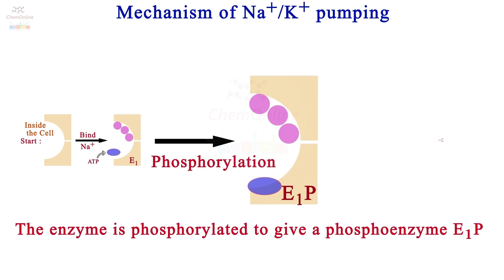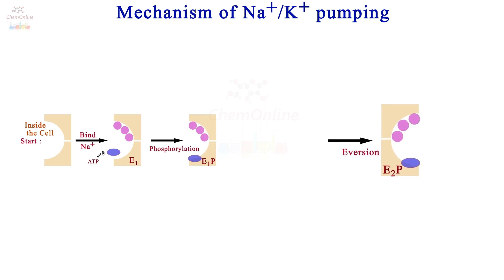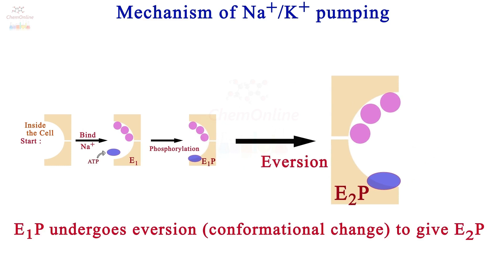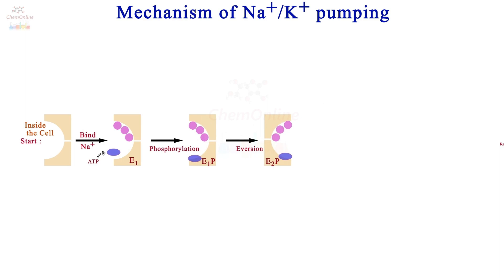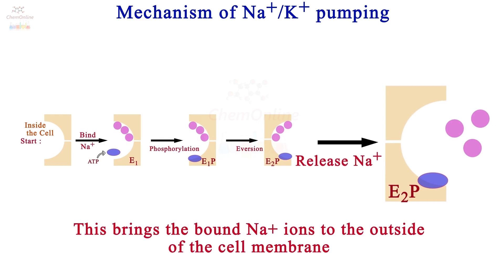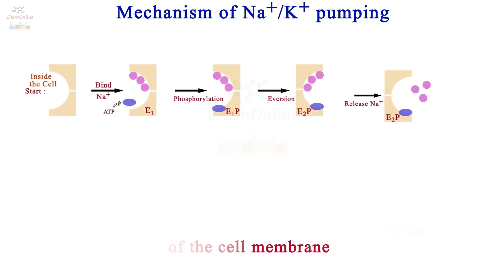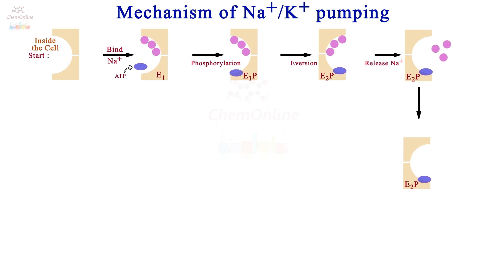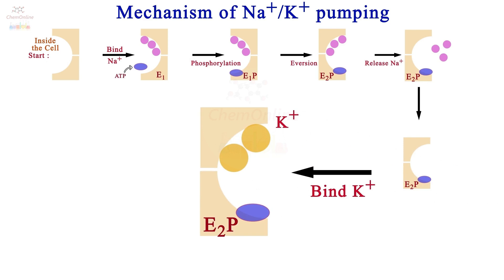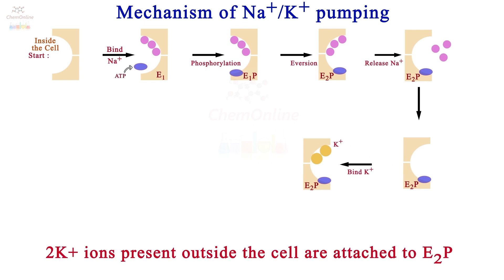Phosphorylation of the enzyme leads to a conformational change, or eversion, to give another phospho-enzyme E2P. This conformational change exposes the sodium ions to the outside of the cell membrane. E2P has low affinity for sodium ions, and hence the three sodium ions are released. However, E2P has high affinity for potassium ions.